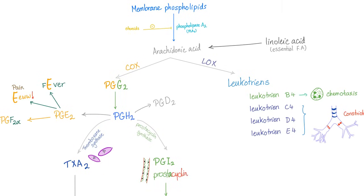Let's put it all together. We start with the membrane phospholipids. Thanks to phospholipase A2, we have arachidonic acid, which also comes from linoleic acid. Through cyclooxygenase, we get prostaglandin G2, then H2. Prostaglandin H2 can give us prostaglandin D2 and E2. Prostaglandin E promotes fever and pain. Then prostaglandin F2-alpha. Prostaglandin H2, depending on the tissue, gives us thromboxane A2 and prostacyclin.